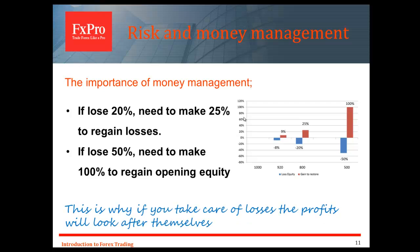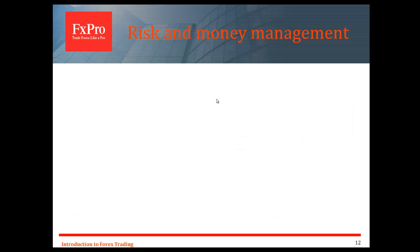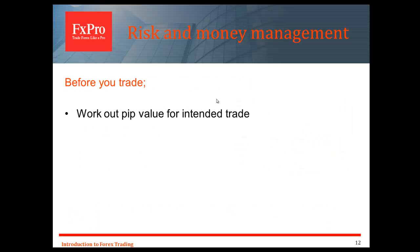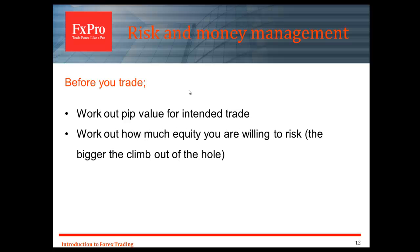If you take care of the losses — really rationalize how much you're prepared to lose — then the profits look after themselves. Taking care of that risk capital is a way of making it more likely that the profits work out. That's why I underline these points: work out the PIP value of your intended trade, work out how much equity you're willing to risk. The bigger the risk, the bigger the climb out of the hole if you start losing trading capital.